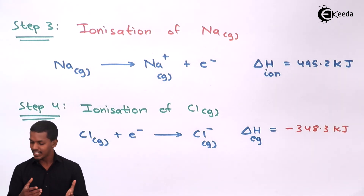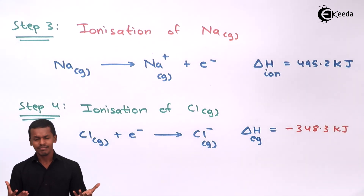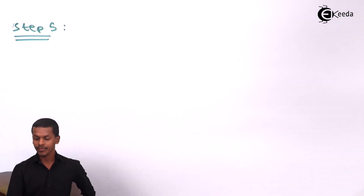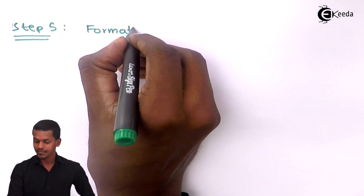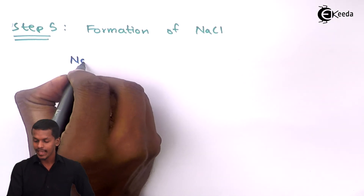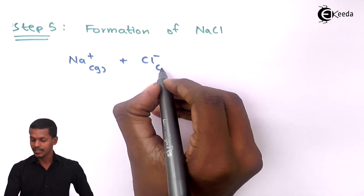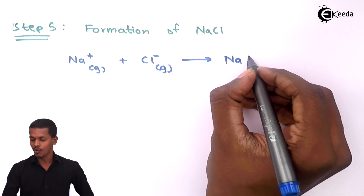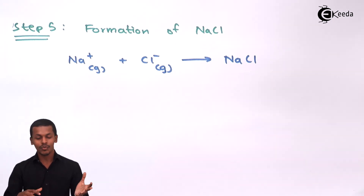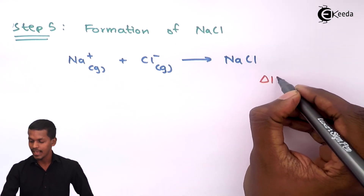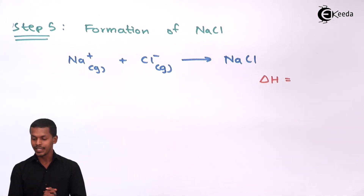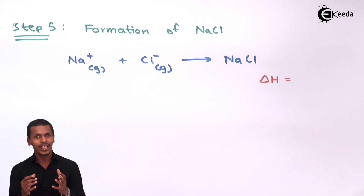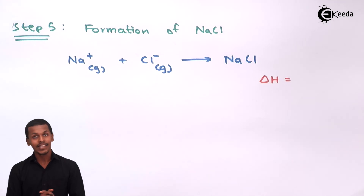Now we have obtained Na⁺ and Cl⁻. Step 5 is formation of NaCl: Na⁺ combines with Cl⁻ to form NaCl due to electrostatic force of attraction, and energy is released. This energy is denoted by delta H and gives the lattice energy of the overall NaCl — the amount of energy involved in forming NaCl from its ions.